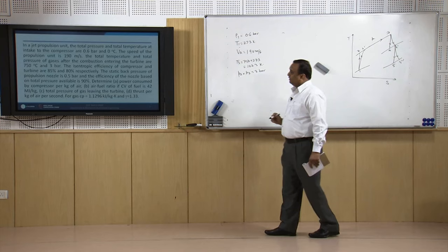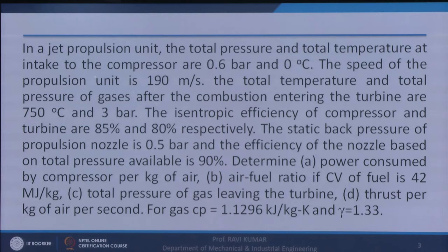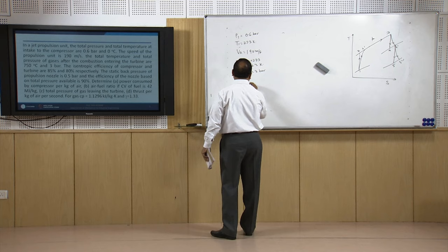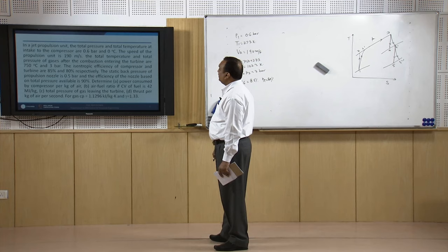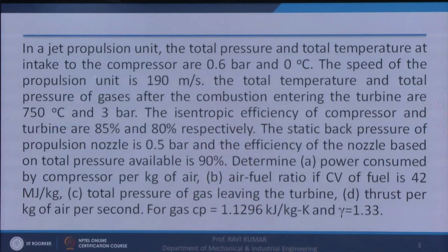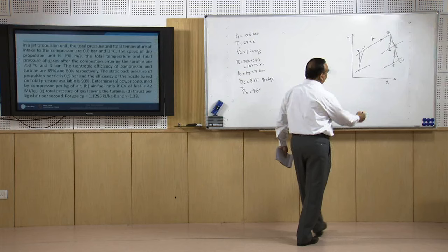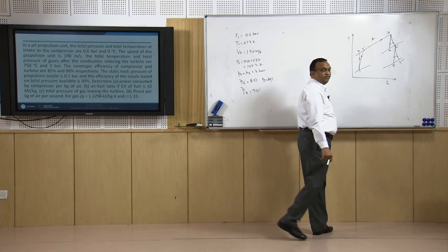The isentropic efficiency of the compressor is 85% and the efficiency of the turbine is 80%. The static back pressure of the propulsion nozzle is 0.5 bar and the efficiency of the nozzle based on total pressure available is 90%.